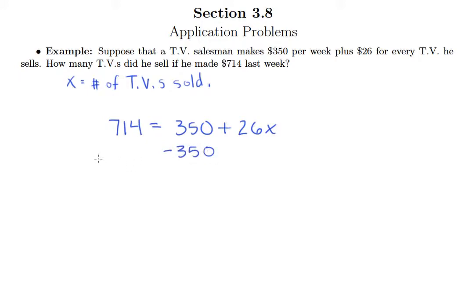So we'll go ahead and subtract 350 from both sides. So we have just 26X on the right and on the left side here, 364.